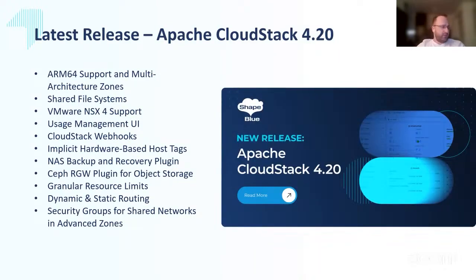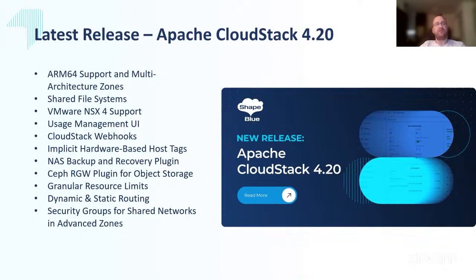A couple of quick new features in the last release: we introduced ARM64 support with a multi-architecture zone, so when you create a zone you can choose whether it will be ARM64 or x86-64. We've also introduced something called SharedFS for customer tenant workloads, effectively providing an NFS appliance. We've also introduced VMware NSX support — and while you might ask why now given the Broadcom situation, there are some very large CloudStack users who had a specific need for it.